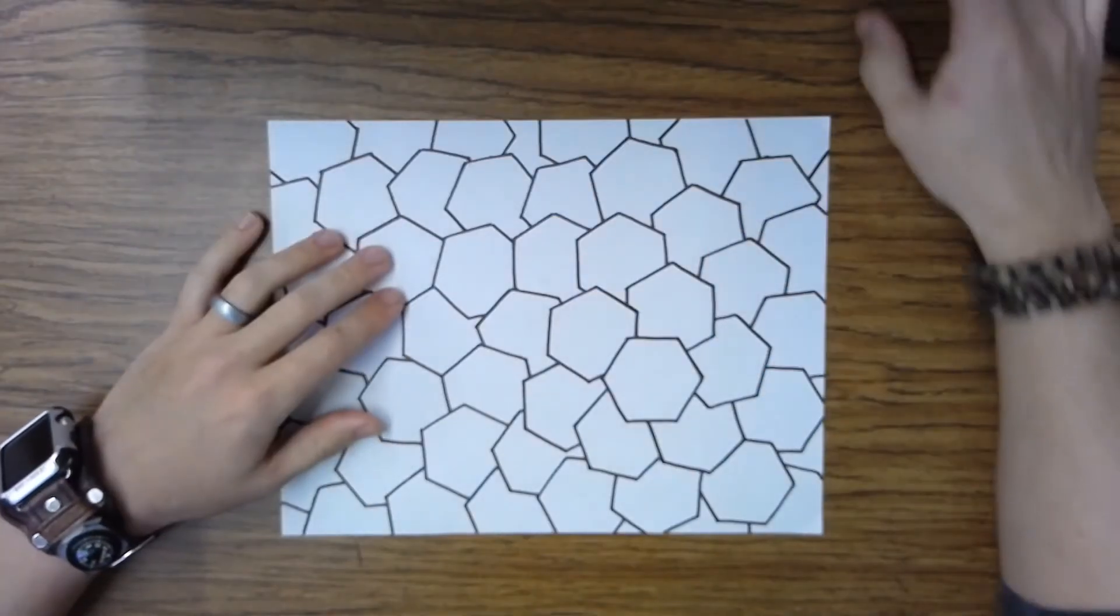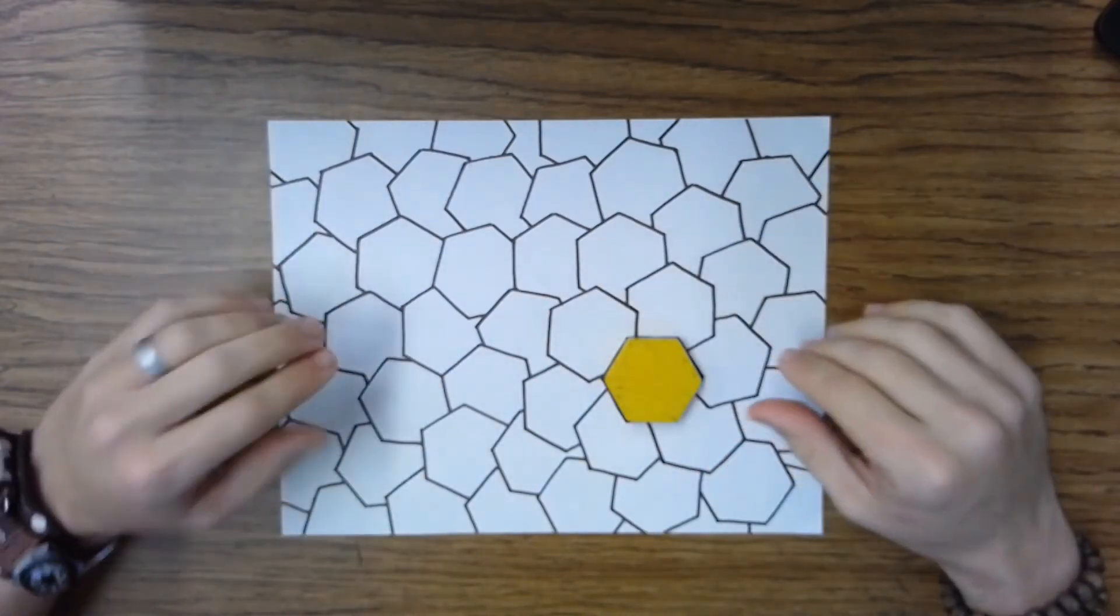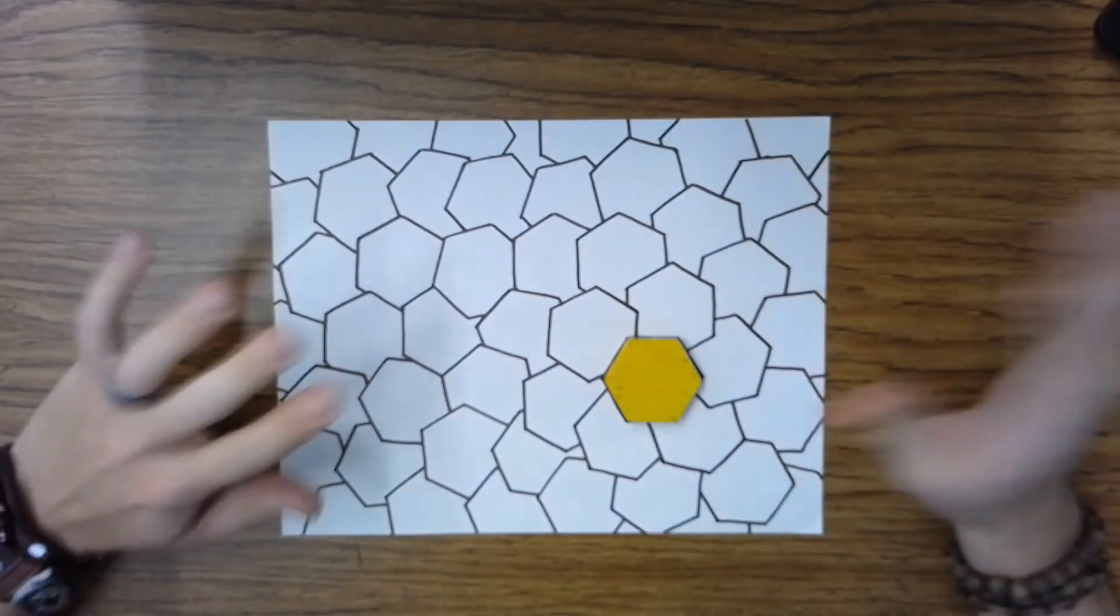So as you can see I have traced my shape all over this paper. I've also outlined it with some marker to make it stand out a little bit more, but you don't have to do that.